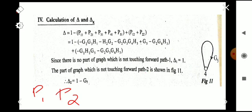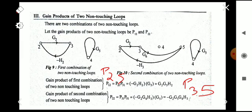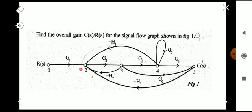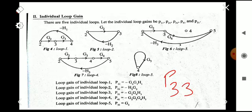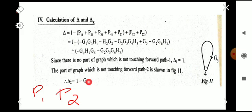Delta2 is the delta for the part of the graph not touching the second forward path. The loop g5 does not touch the second forward path. So Δ2 = 1 − g5.